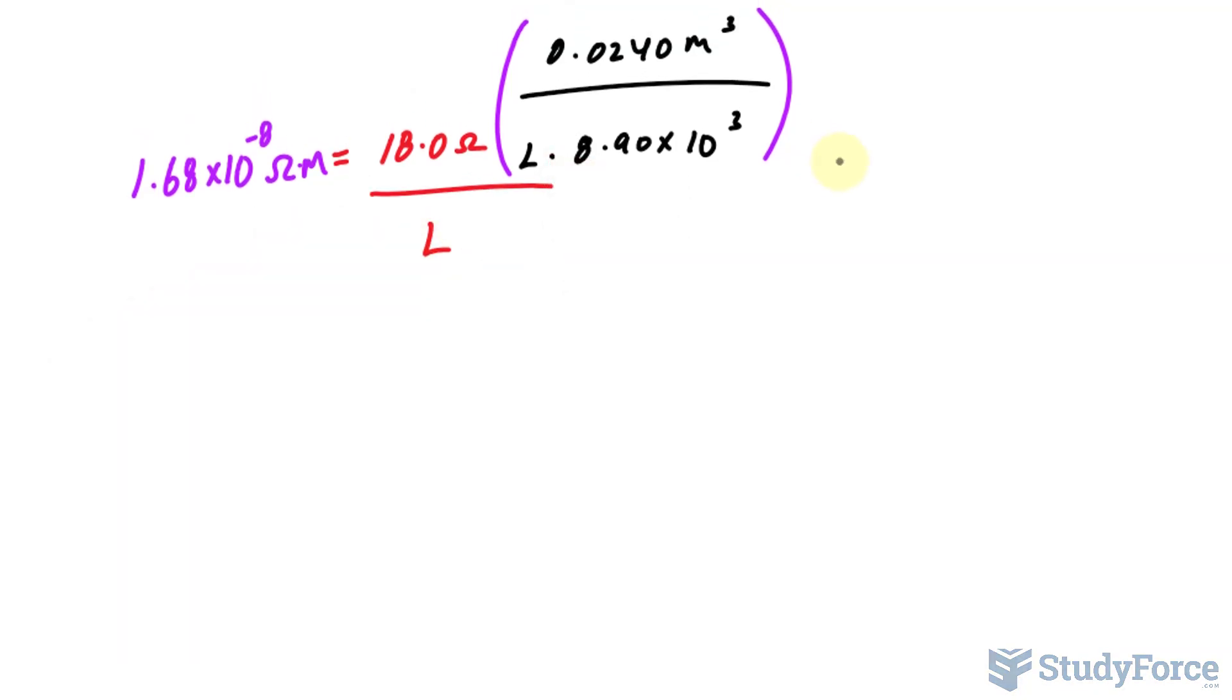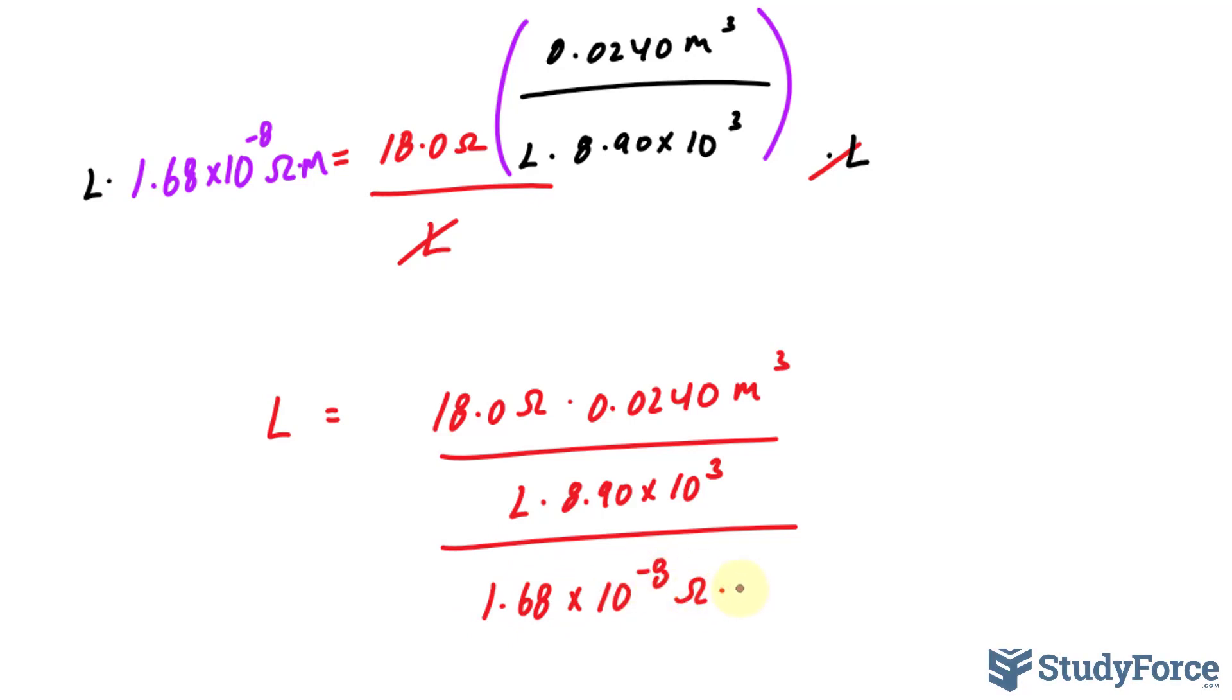I can solve for L by multiplying both sides by L. This will cancel out this L. And subsequently I'll divide both sides by this number. Where I end up with length is equal to 18.0 ohms times that expression again. And to make things simple, I'll multiply 18 to the top. So I have 18.0 ohms times 0.0240 meters cubed over that expression. Length times 8.90 times 10 to the power of 3 over. Remember, I divided both sides by that. So I'll write down 1.68 times 10 to the power of negative 8 ohms times meters.